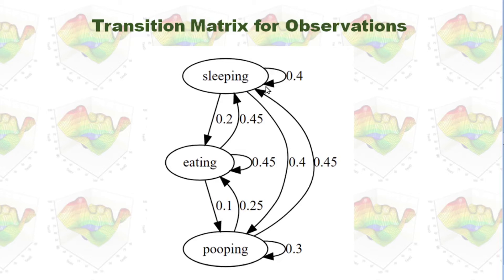For example, this line means after the dog does sleeping, he might do sleeping again in 40% probability, and he might do eating after sleeping in 20% probability.